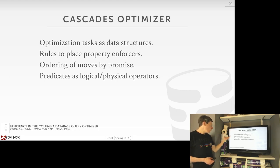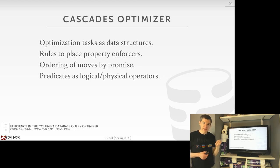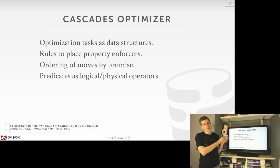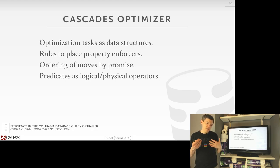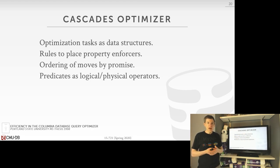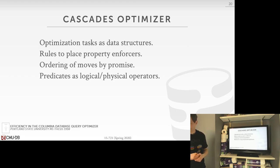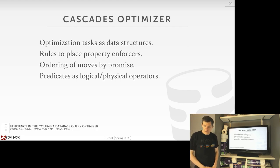Third, you can define the priority or ordering of rules that get applied, based on promises. Rather than randomly picking what transformation to apply at a given level, you can specify an order dynamically — identifying aspects of your query plan and saying 'we think these transformations will lead to the optimal plan more quickly, so apply these first, and only evaluate others if we have more time.'